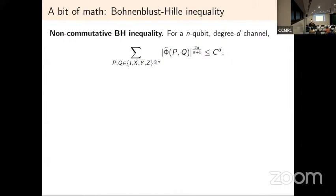To accomplish this we need the Bonami-Beckner inequality. What we prove is a non-commutative Bonami-Beckner inequality: for an n-qubit degree-d channel, the sum of the Pauli coefficients raised to the power 2d/(d+1) is at most a constant to the power d. This is mathematically interesting for two reasons: the exponent 2d/(d+1) is strictly less than 2, and the bound does not depend on n. If the exponent were 2, a Parseval-type argument would give an upper bound of 1, but translating to the smaller exponent via Hölder's inequality would introduce n-dependence. The n-independence is what makes this powerful.